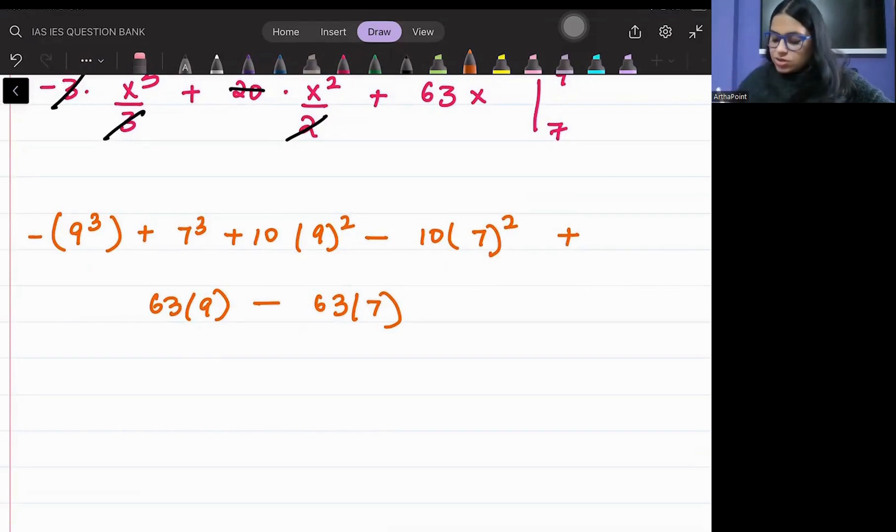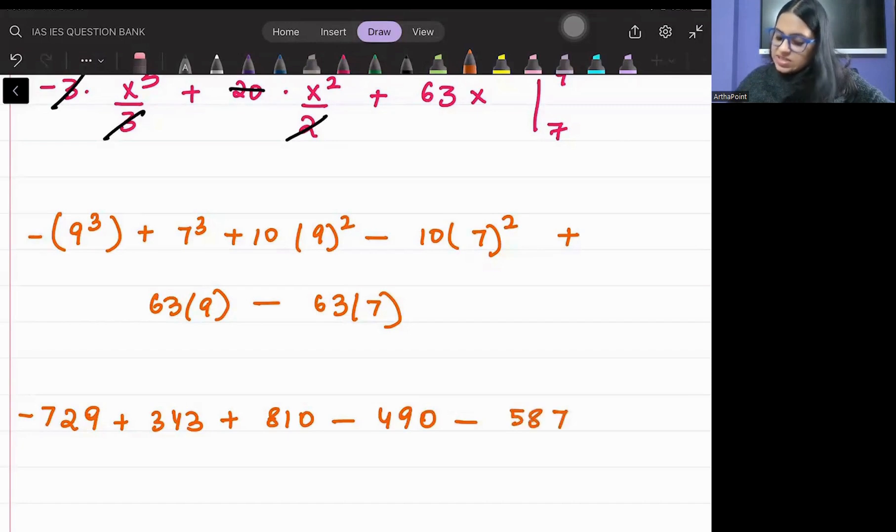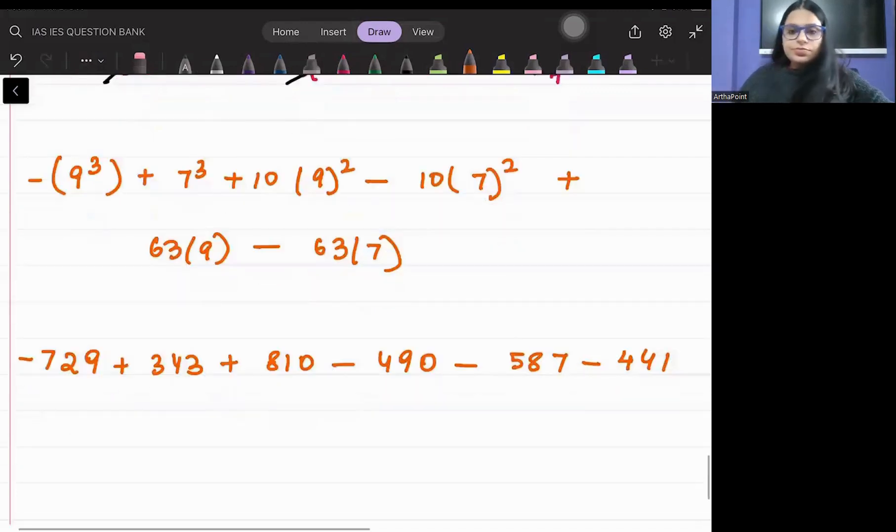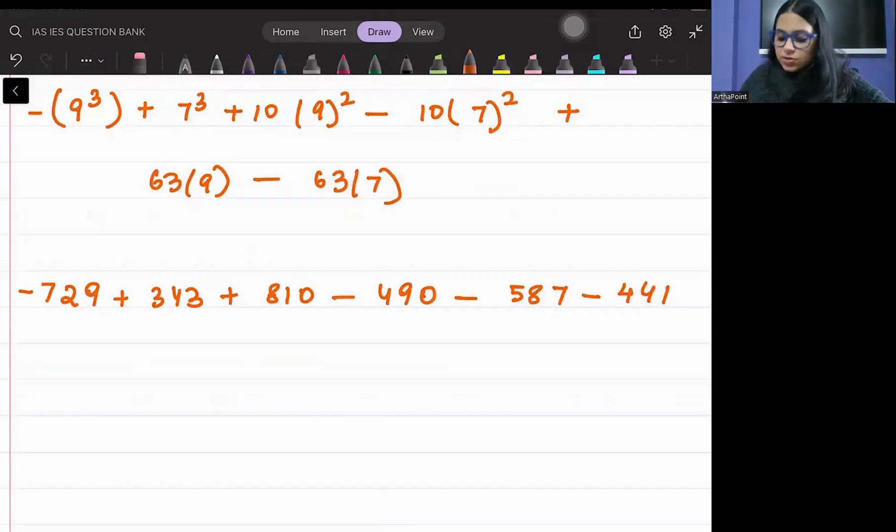So instead of X I will put minus 9 cube plus 7 cube plus 10 times 9 square minus 10 times 7 square plus 63 into 9 minus 63 into 7. This is a huge calculation. So 9 cube is 729, 7 into 7 into 7 is 343, 9 whole square is 81, 7 whole square is 49, 63 into 9 is 587, and 63 into 7 is 441. Please check these calculations, I am just doing them instantly. So use a calculator and just try to solve this.